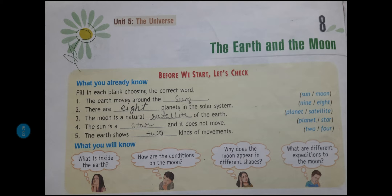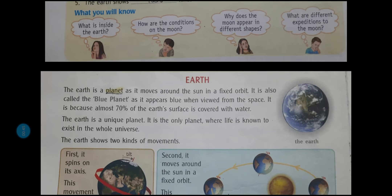In this chapter we are going to discuss topics like what is inside the earth, how are the conditions on the moon, why does the moon appear in different shapes, and what are different expeditions to the moon. So let's start.